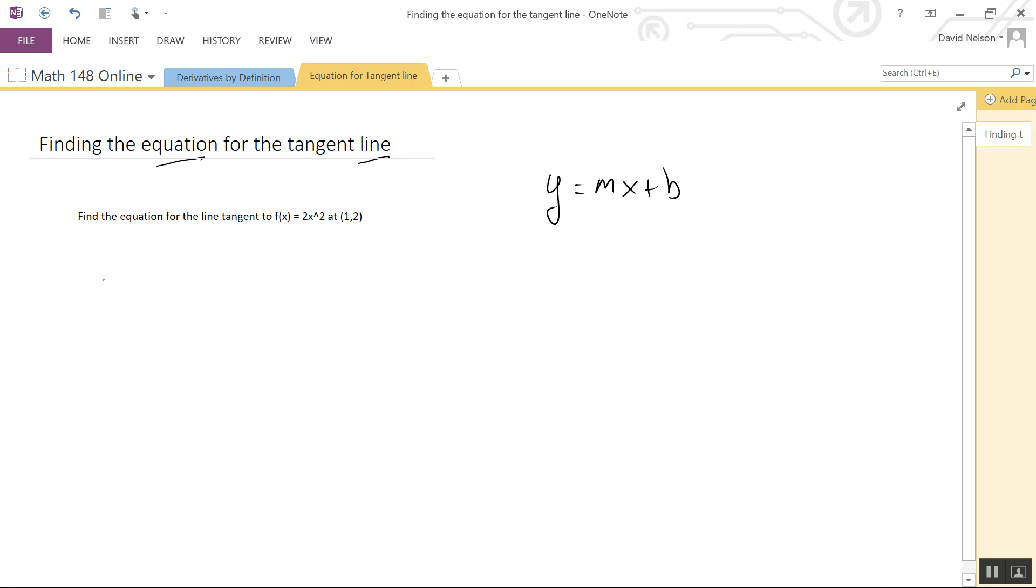What we're learning in calculus is that the slope of the tangent line is the derivative at that particular point. So f'(1) should give us the slope. We need to find the derivative at 1 to get the slope.